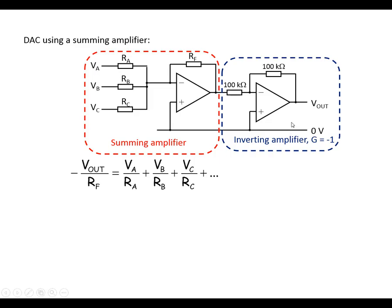And then we follow that with an inverting amplifier with a gain of minus 1. It means that the voltage here is just multiplied by minus 1. So, combine these together, gives us the output of the system based on input voltages A, B, and C using this formula.